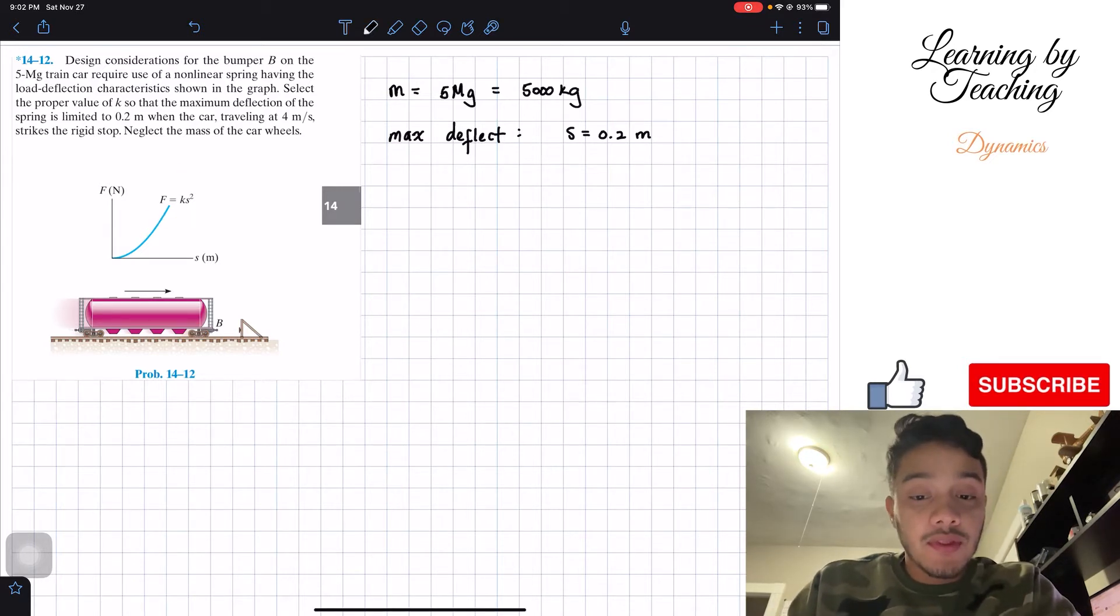They're also telling us that the car is traveling at the beginning, it's traveling at 4 meters per second, and I'm going to call this v1.